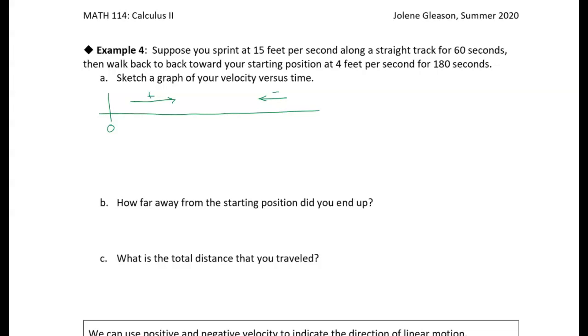So remember, velocity has direction. Velocity has direction, and speed does not. Okay? So there's a big difference when you're in physics, when you're dealing with velocity. Velocity and speed does not. Okay, so velocity has direction. And when we're dealing with linear motion, we're going to use positive and negative to indicate direction. So positive velocity would be to the right, negative velocity would be to the left.